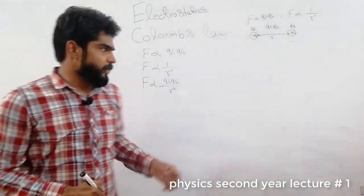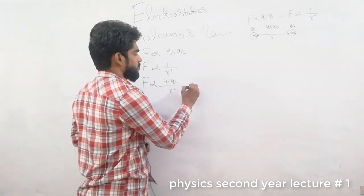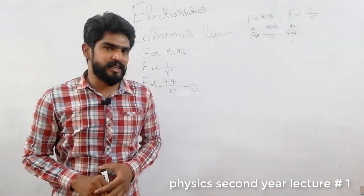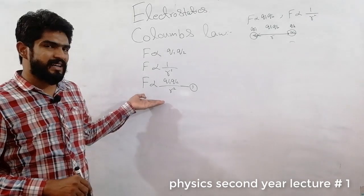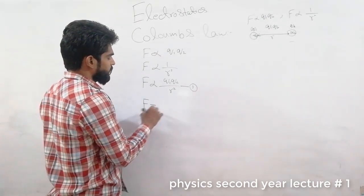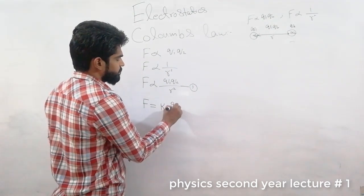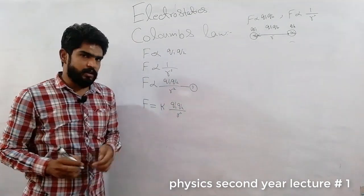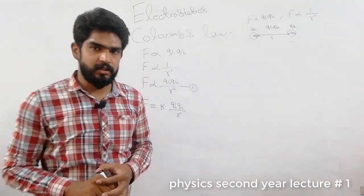From the definition, we have built one relation (version 1). This has a proportionality sign. To convert proportionality into equality, we introduce a constant k. So force is equal to k q1 q2 over r square.